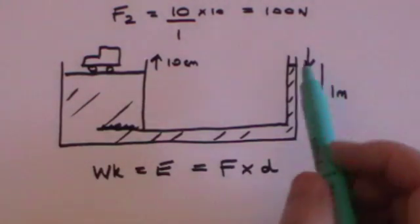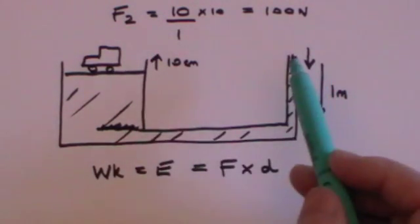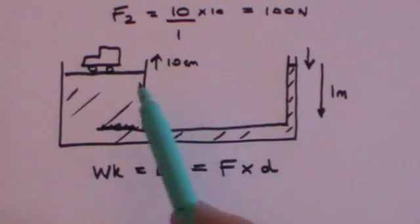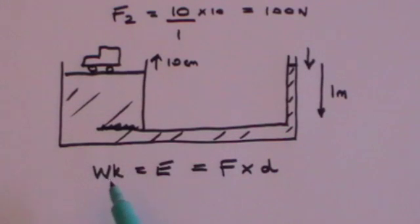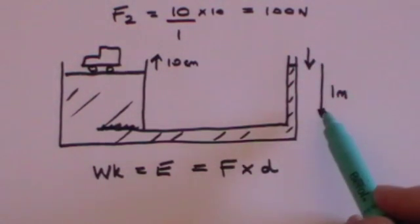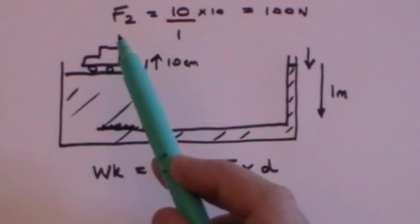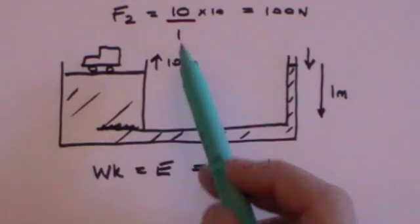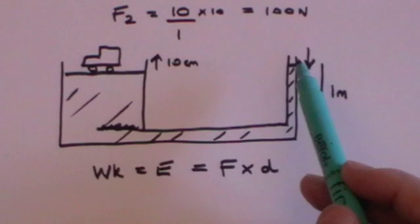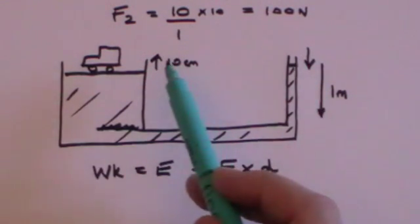Small force times large distance equals large force times small distance. The point is that if you want that car to go high up on a ramp, you're going to have to push this piston down an awful long way because it doesn't go up metre for metre. The work done is force times distance, and that will be the same on both sides.